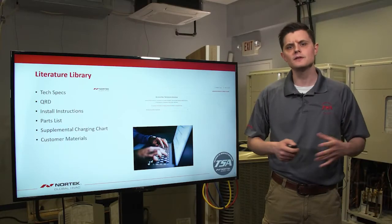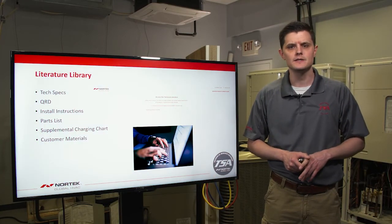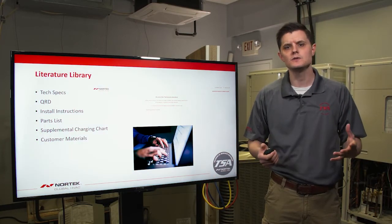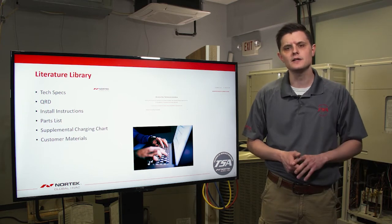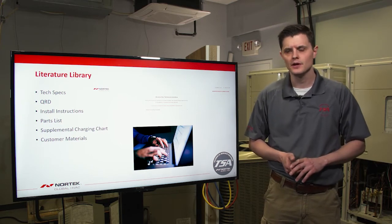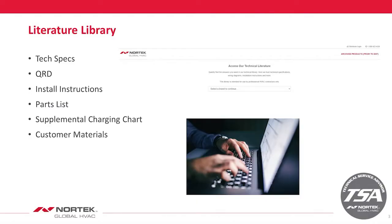When it comes to the literature library, there are going to be documents available to you as a distributor and to the contractors out in the field. They're going to be the tech specs, the QRD, the install instructions, parts lists, the supplemental charging chart, and customer materials. We're going to take a look at each one of those today and how that applies to the literature library.